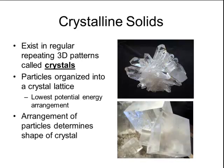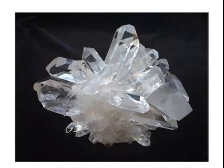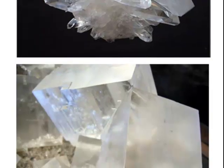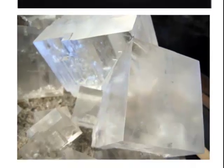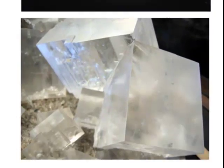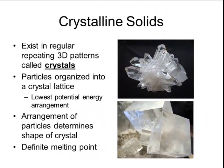The arrangement of the crystal lattice particles determines the shape of the crystal. For example, in the two pictures to the right, the top crystal has sort of a hexagonal arrangement, whereas the bottom crystal is a cubic arrangement. Regardless of their crystal lattice shape, all crystalline solids have a definite melting point.